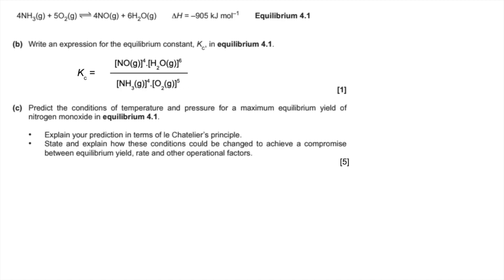Final part of the question: we've got to predict the conditions of temperature and pressure for a maximum equilibrium yield of nitrogen monoxide. In other words, what conditions are going to favor the forward reaction? The first thing I would do is look at the key bits of information from the equilibrium—the enthalpy change sign is very important, and the number of moles of gas left and right, because that's going to impact on the pressure.